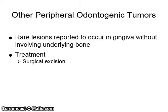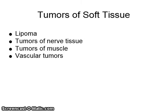Other peripheral odontogenic tumors are rare lesions reported to occur in the gingiva without involving underlying bone, and they are surgically excised.